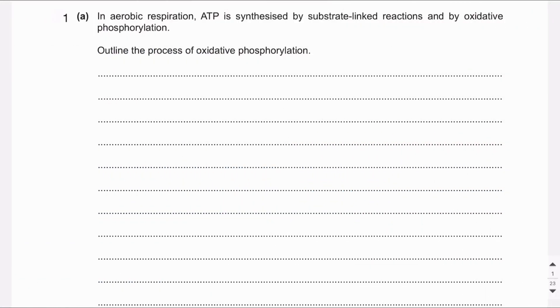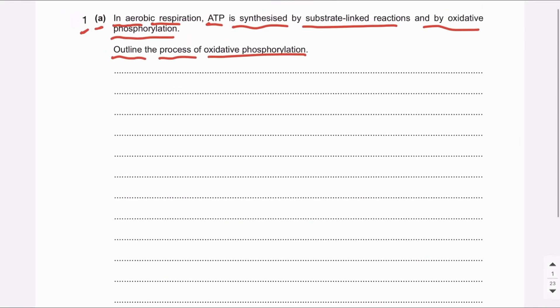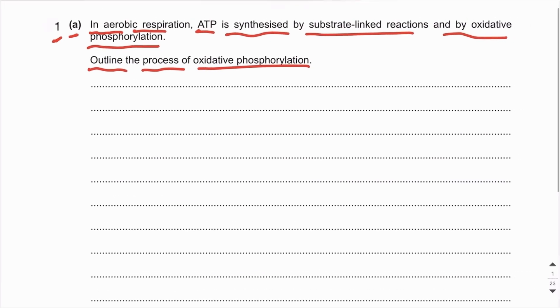Assalamu Alaikum everyone. In this video lecture we will be discussing the topical questions of the first topic of A2 level biology, that is energy and respiration. Let's start question number one, part A. In aerobic respiration, ATP is synthesized by substrate-linked reactions and by oxidative phosphorylation. Outline the process of oxidative phosphorylation. This question is seven marks and we have to write any seven points regarding oxidative phosphorylation.